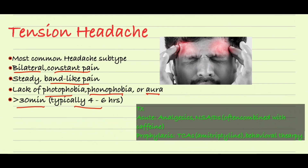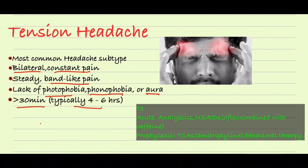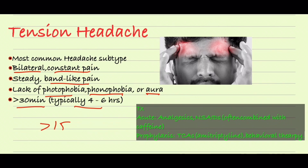Tension headaches lack photophobia, phonophobia, or aura — they are not like migraine in that regard. We call them chronic tension headaches when the headache occurs more than 15 days in a month. For acute treatment we use analgesics and NSAIDs, often combined with caffeine. For prophylaxis we use amitriptyline and behavior therapy.